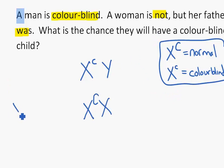Here's her colorblind father. Remember, nothing on the Y. She inherited an X from him because she's a female. Therefore she's got the small c here. This is her.